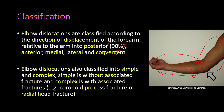We will talk about convergent elbow dislocation a little later. Elbow dislocations are also classified into simple and complex: simple dislocation is without associated fracture, and complex is with an associated fracture such as the coronoid process or radial head fracture.